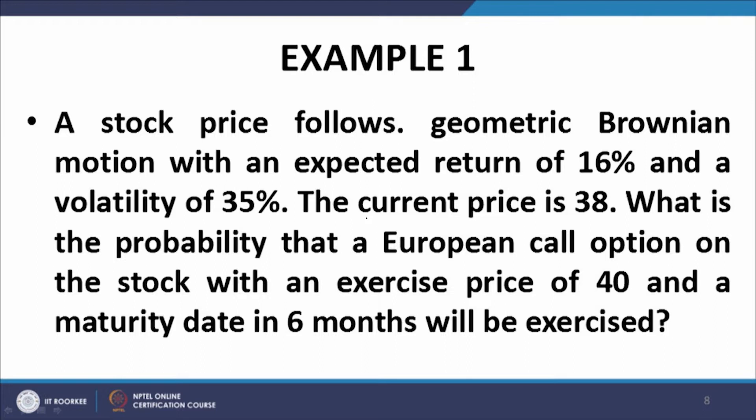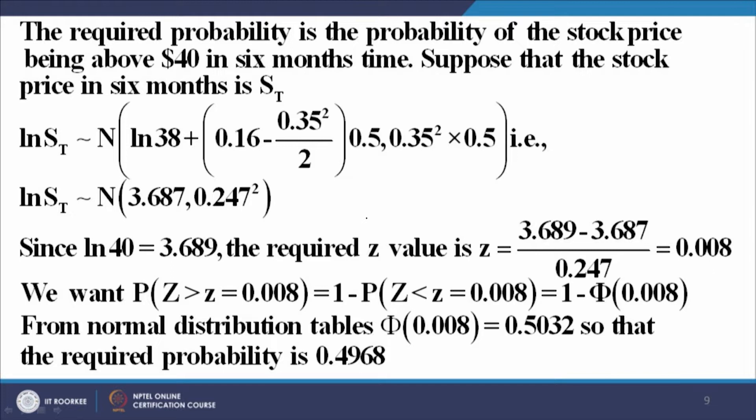Now let us do an example. A stock price follows geometric Brownian motion with an expected return of 16% and a volatility of 35%. The current price is 38. What is the probability that a European call option on the stock with an exercise price of 40 and a maturity date in 6 months will be exercised? So: expected return μ = 16%, volatility σ = 35%, current price S0 = 38, exercise price K = 40, call option, maturity 6 months.